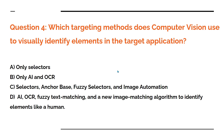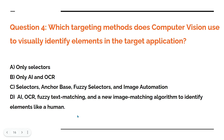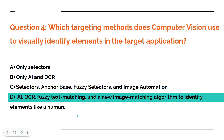Question number four: which targeting methods does computer vision use to visually identify elements in the target application? Option A: it uses selectors only. Option B: AI and OCR only. Option C: selectors, anchor base, fuzzy selectors, image automation. Option D: AI, OCR, fuzzy text matching, and new image matching algorithm. Please do comment — question four, what is your answer? The answer is D.